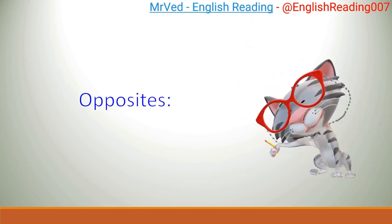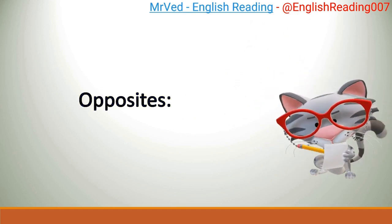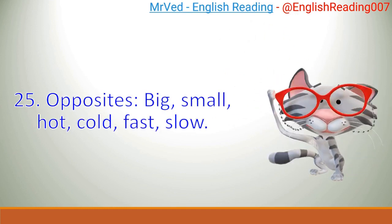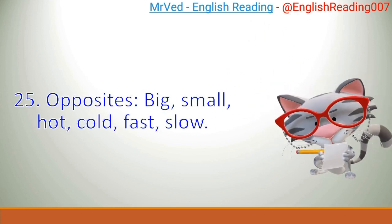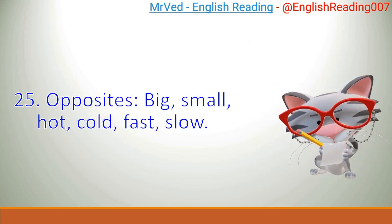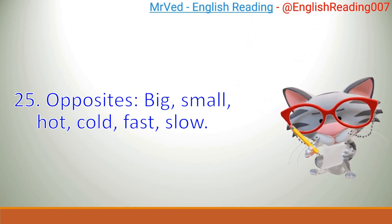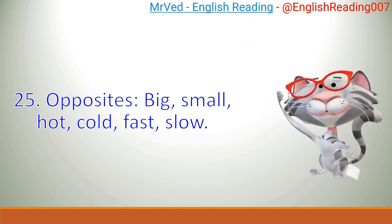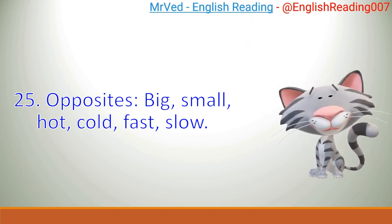Opposites. 25. Opposites: Big, Small, Hot, Cold, Fast, Slow.